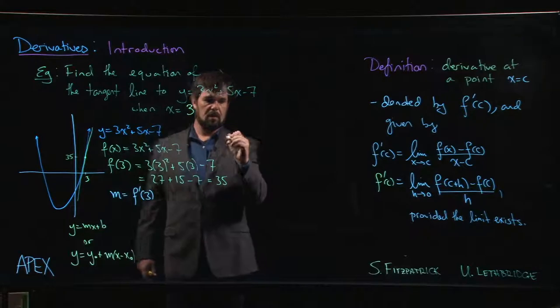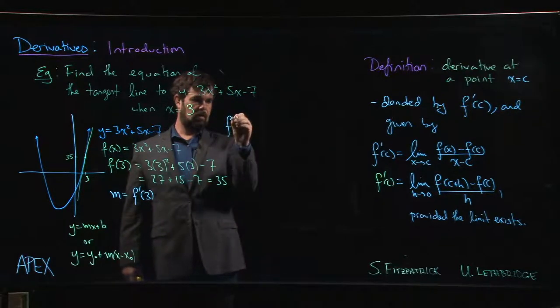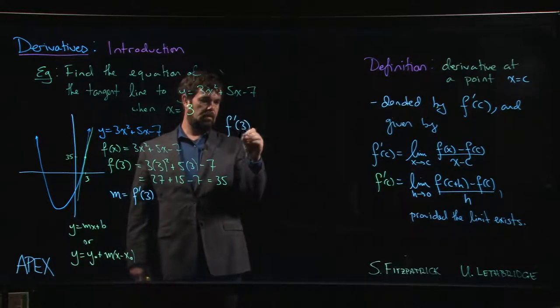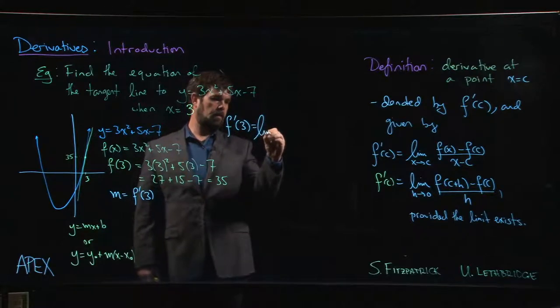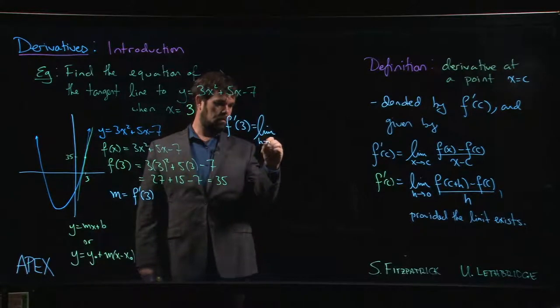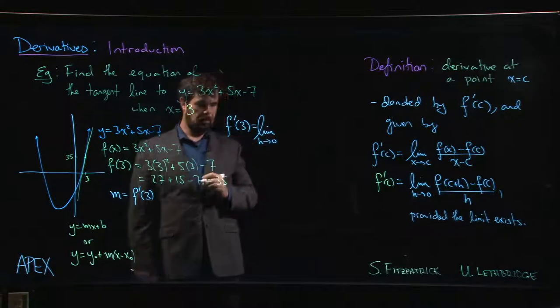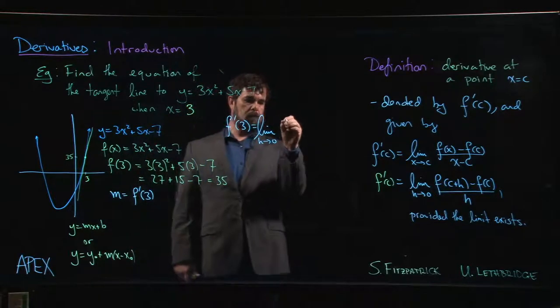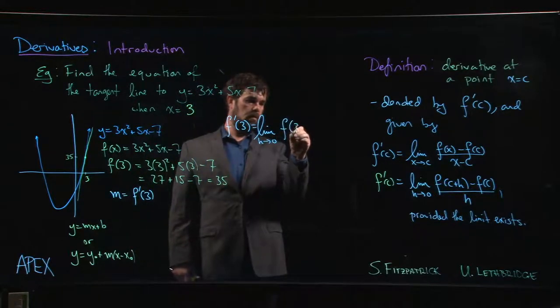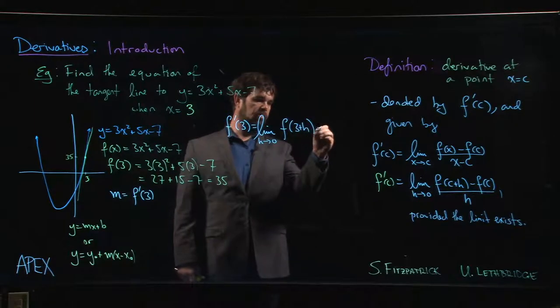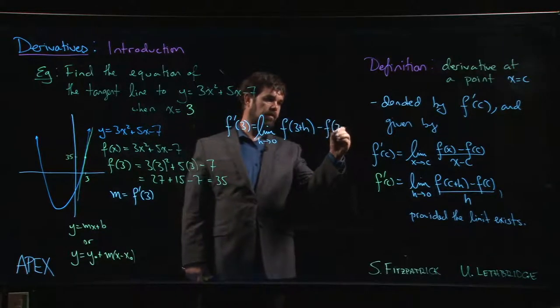So we go f prime of 3 is the limit as h goes to 0 of f of 3 plus h minus f of 3, over h.